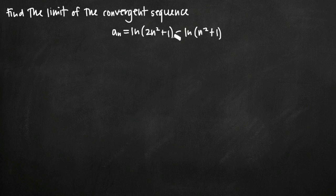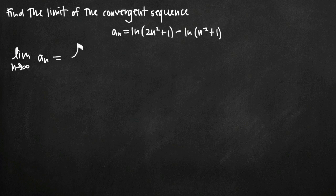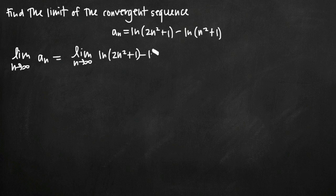So when we try to find the limit of this as n goes to infinity, we know that we're going to get a real answer as opposed to the limit not existing. We're going to say the limit as n goes to infinity of the sequence a sub n, which of course is the limit as n goes to infinity of the natural log of the quantity 2n squared plus 1 minus the natural log of the quantity n squared plus 1.